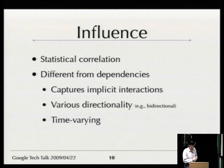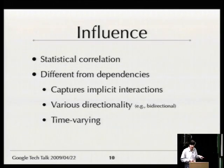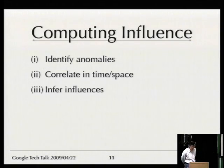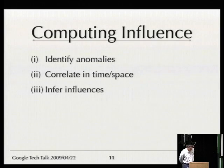This approach will lead to a different kind of output. We might have bidirectional correlations — we might not be able to tell the direction of influence because two components seem to mutually affect each other, so we might end up with a bidirectional edge. The rest of the talk will cover how we compute influence: starting with anomalies, then correlation in time and space, and finally the inference.